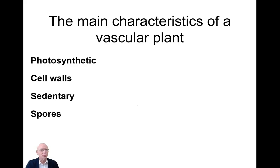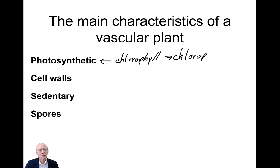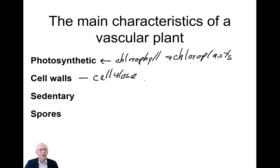What is a plant and why should we study plant systematics? Of course, you know that plants are photosynthetic organisms. They have chlorophyll, which is maintained in chloroplasts. They have cell walls, and those cell walls are composed of cellulose, and those cell walls are outside the plasma membrane.